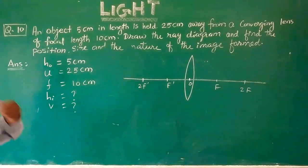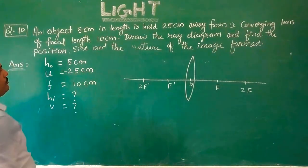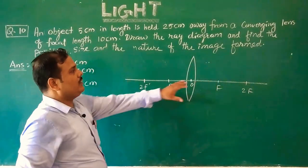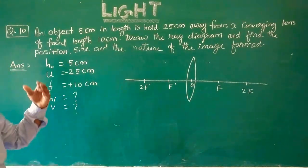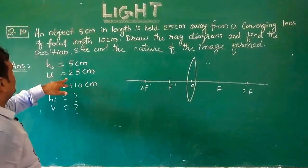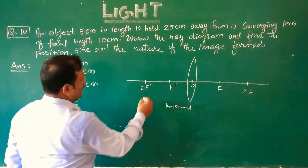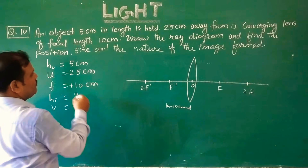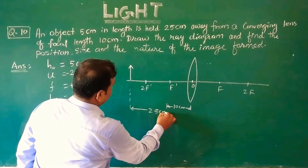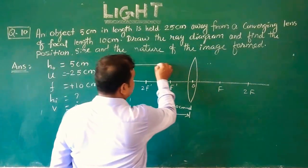This is a converging lens diagram. For a converging lens, the image side will be negative and the focus on the converging lens side will be positive, as I told in previous videos. The focal length is 10 cm, so 2F will be 20 cm. The object is at 25 cm, which means the object is placed beyond 2F. So the diagram will be like this.